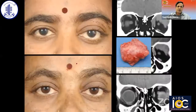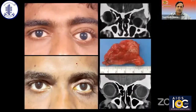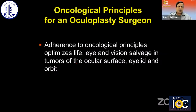In multimodal treatment, we perform biopsy to confirm the diagnosis, then chemoreduce the tumor, then do an en-bloc excision and deliver stereotactic radiation — and that works very well for adenoid cystic carcinoma with much improved outcome. In conclusion, adherence to oncological principles optimizes life, eye, and vision salvage in patients with tumors of the ocular surface, eyelid, and orbit. Thank you so much.